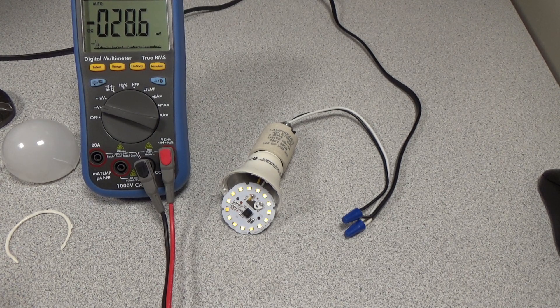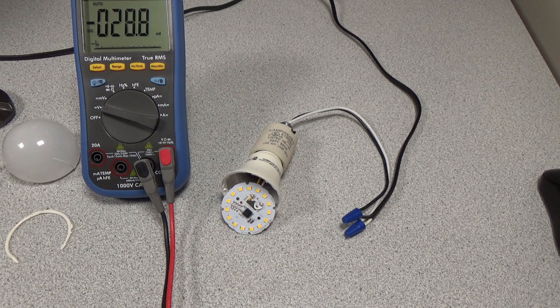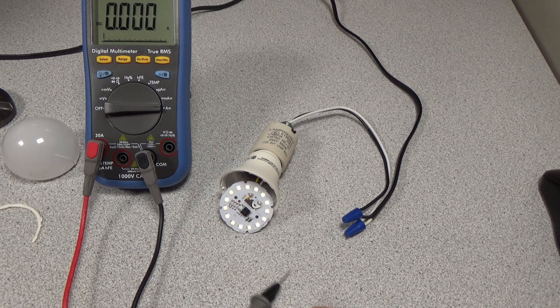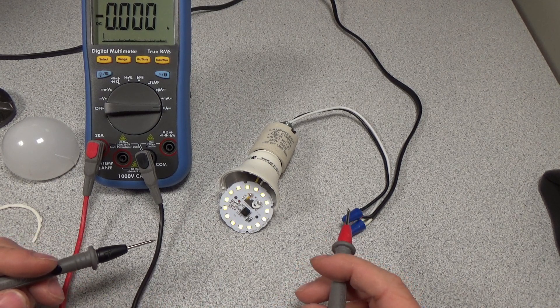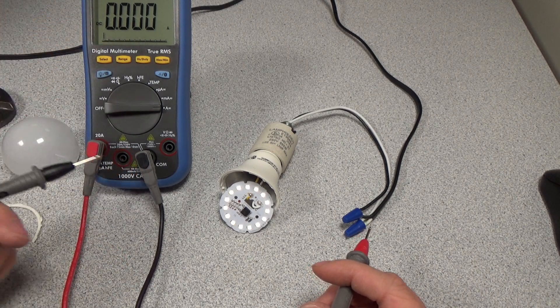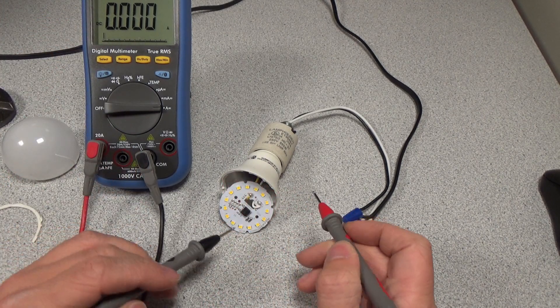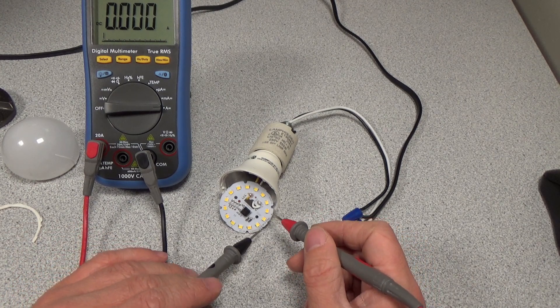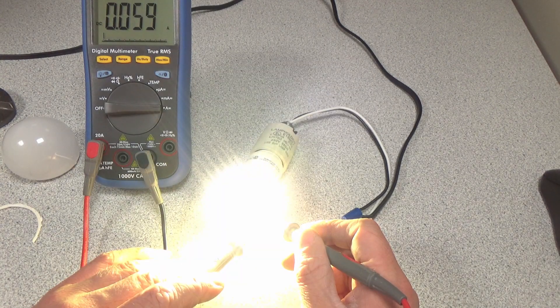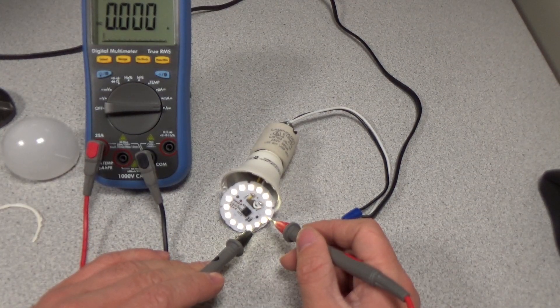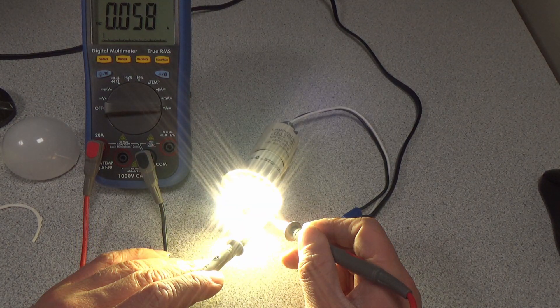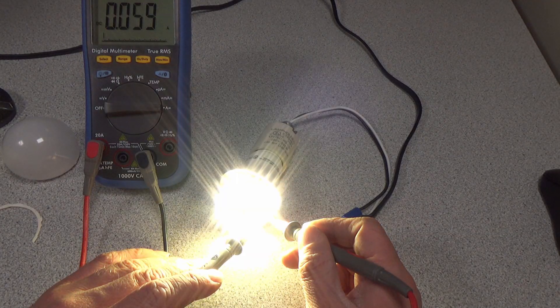Alright, so we have that LED with the black dot on it. We're very suspicious that that's the bad LED, so I have the meter set to amps right now, so these probes are basically a short. We'll go ahead and connect these probes across that LED that we're suspicious is bad and - there we go, working just fine now. So that LED is the bad one. As soon as we take that out of the circuit, everything works fine.